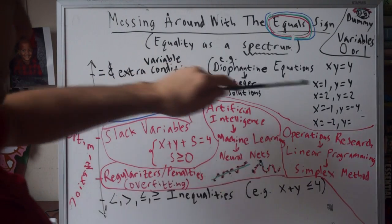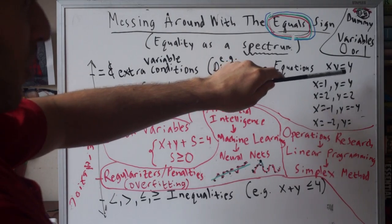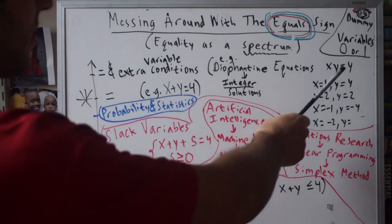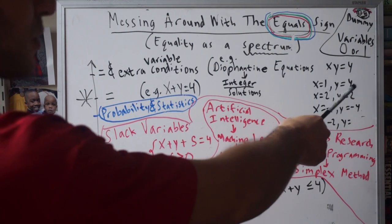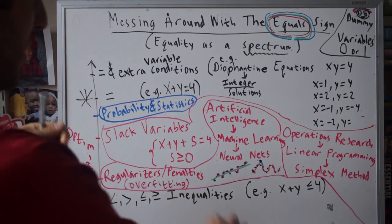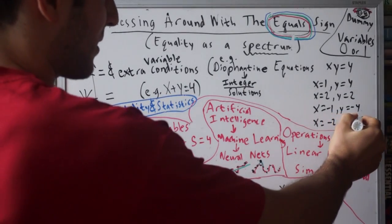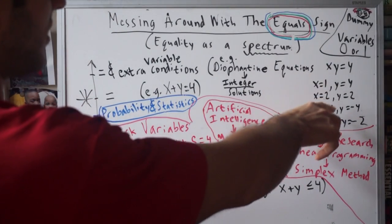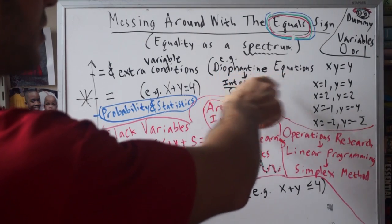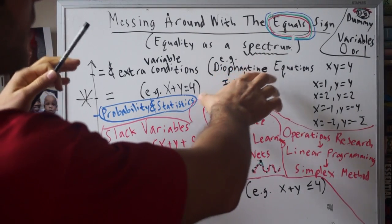Let's take an equality and make it even stricter. Take x times y equals 4, and now we're going to look for integer solutions only. That's x equals 1, y equals 4. I've listed the four pairs over here. That's called the study of Diophantine equations after the Greek Diophantus.